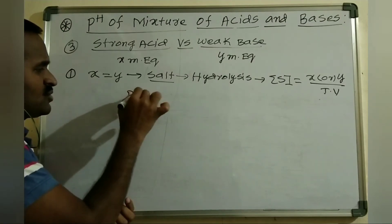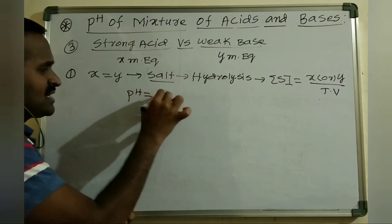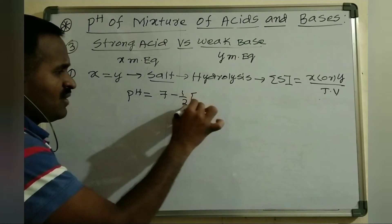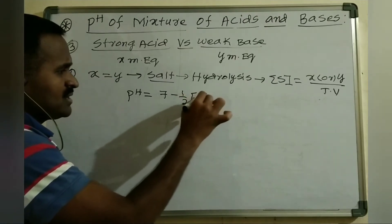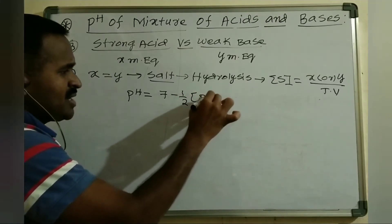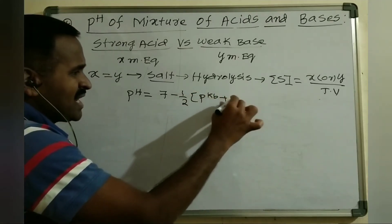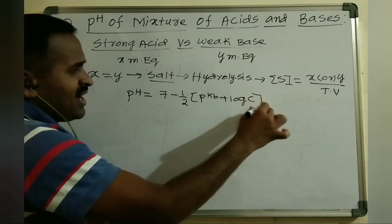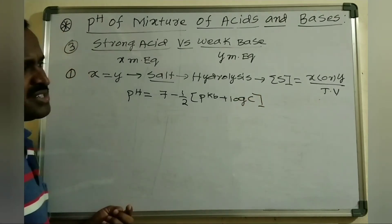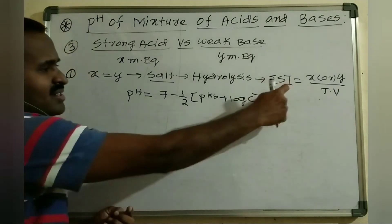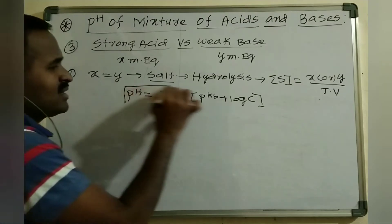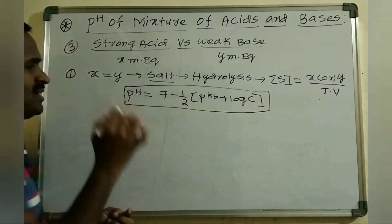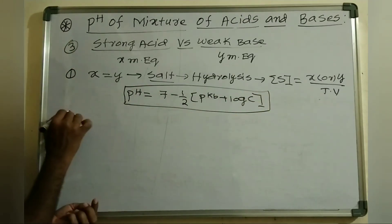You can use the formula: pH equals 7 minus one-half times (pKb + log C), where C is the salt concentration. This formula is used to find the pH when milliequivalents of strong acid equals milliequivalents of weak base.